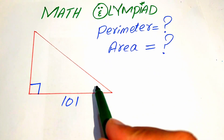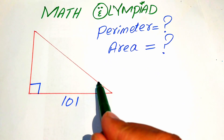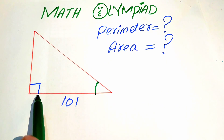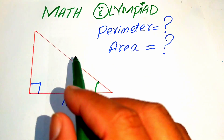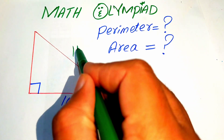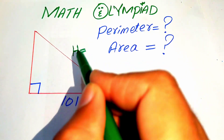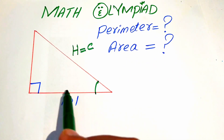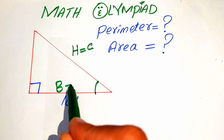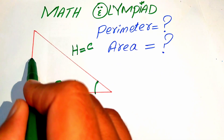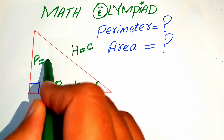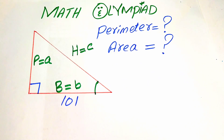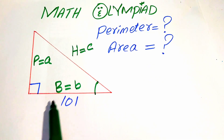This is a right triangle. The side opposite to the right angle is known as the hypotenuse and we denote it by h, or we call this h is c. We denote this side by base, and it is small b. We call this the perpendicular and it is small a. So we have hypotenuse, base, and perpendicular.